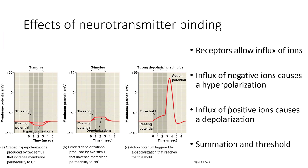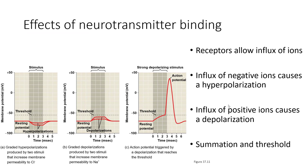If they cause an influx of chloride ions, which have a negative charge, this will cause a hyperpolarization. This is where the negative charge, which is normally at the resting potential of negative 70 millivolts, will become something like negative 80 millivolts. This is hyperpolarized because it is more polarized than the resting potential.